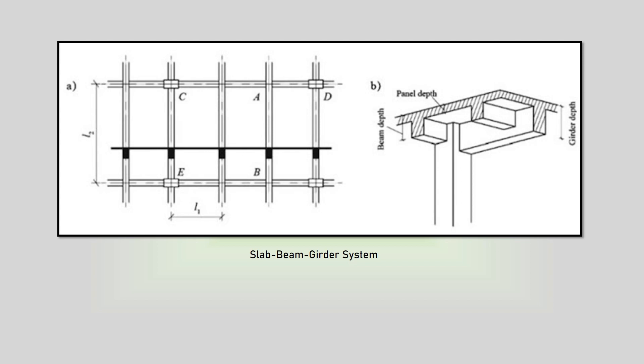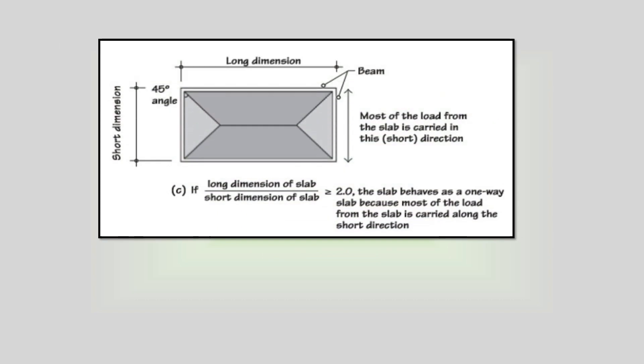If the ratio of the long dimension to the short dimension of a four-side supported slab panel is greater than or equal to two, it is categorized as a one-way slab. Here most of the load on the slab is transferred to the long pair of beams, that is, the load path is along the short dimension of the slab panel.